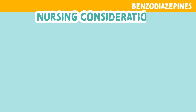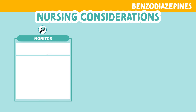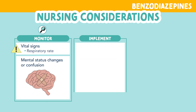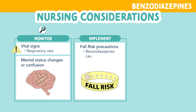Let's look at some nursing considerations for this drug class. You always want to monitor your patient's vital signs, especially their respiratory rate. Remember, this medication puts your patient at risk for respiratory depression. You also want to monitor for any mental status changes such as confusion. You as a nurse should implement falls risk precautions, since these drugs can cause dizziness or unsteadiness.